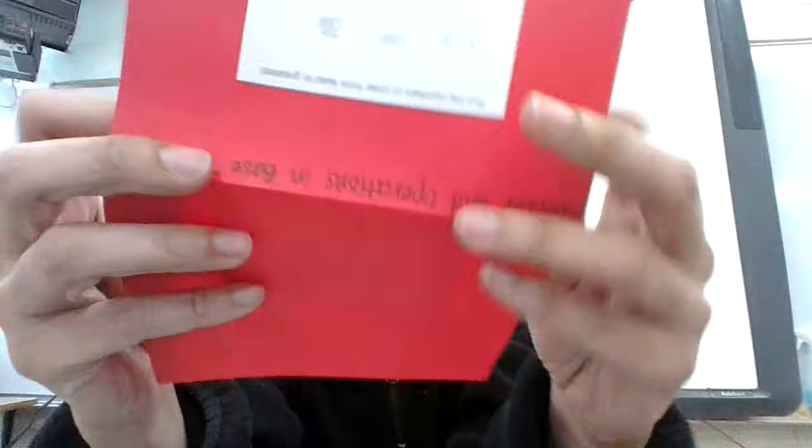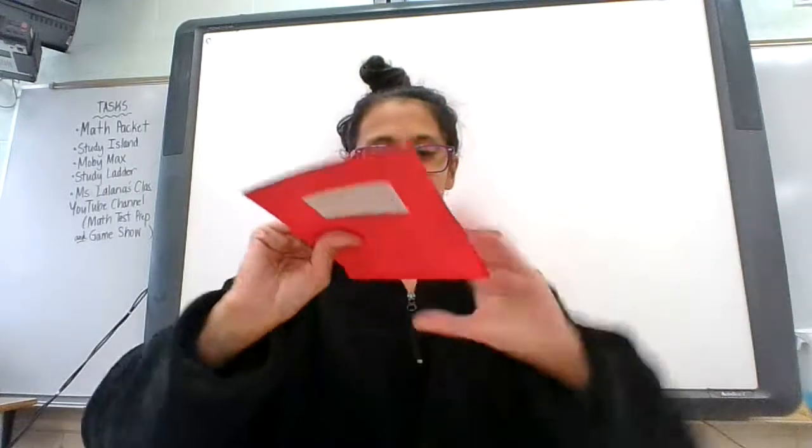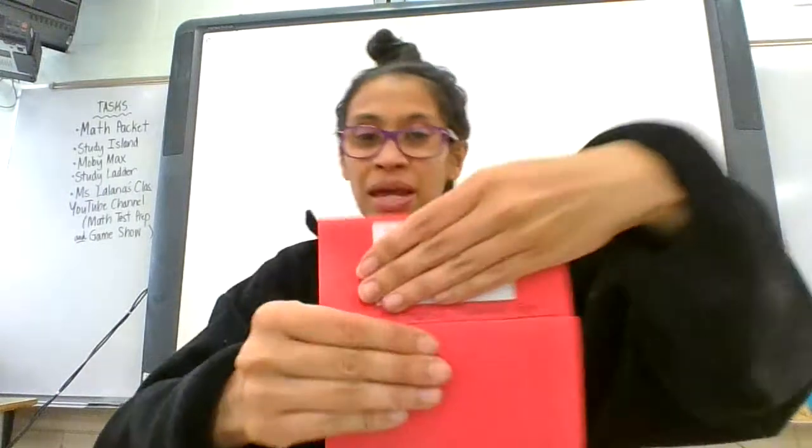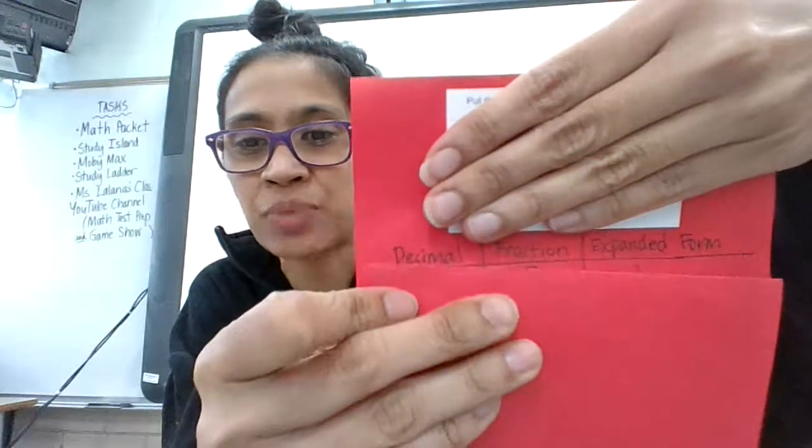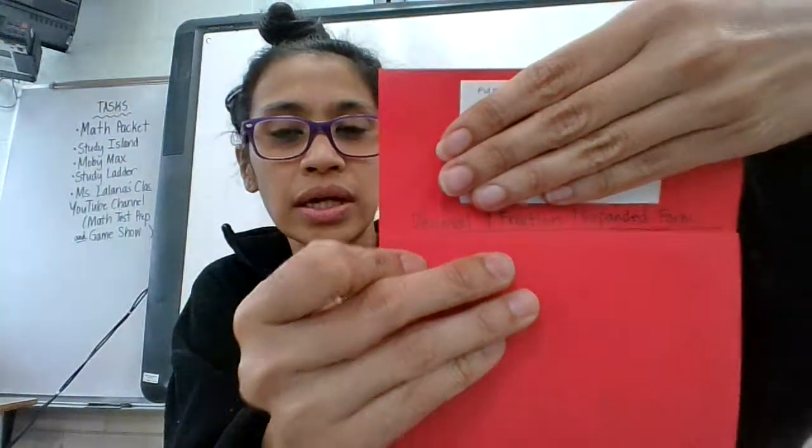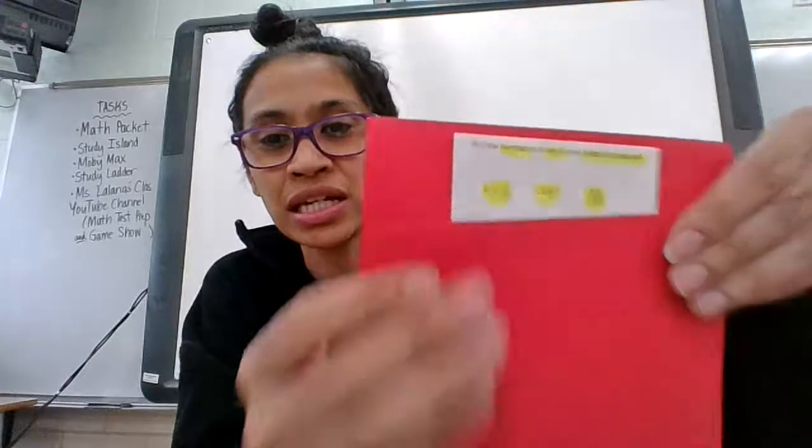So what I did, let me show it to you, was I made a chart like that. I wrote decimal, fraction, expanded form. And then what I did was I took each of these and put them in the chart, okay?